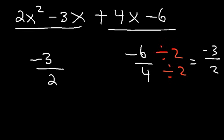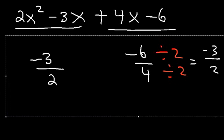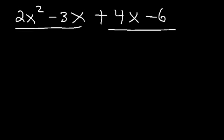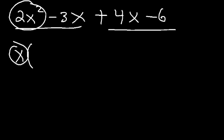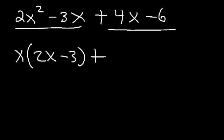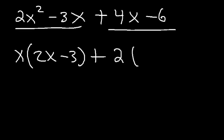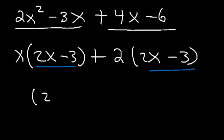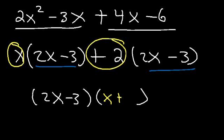So these two expressions have the same ratio, which means we can use factoring by grouping. In the first two terms, take out x: 2x squared divided by x is 2x, and negative 3x divided by x is negative 3. In the last two terms, take out 2: 4x divided by 2 is 2x, and negative 6 divided by 2 is negative 3. We have the common factor 2x minus 3, giving us 2x minus 3 times x plus 2.